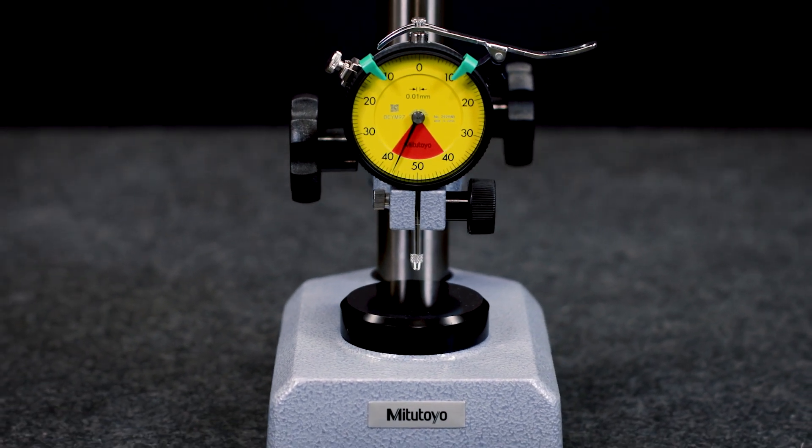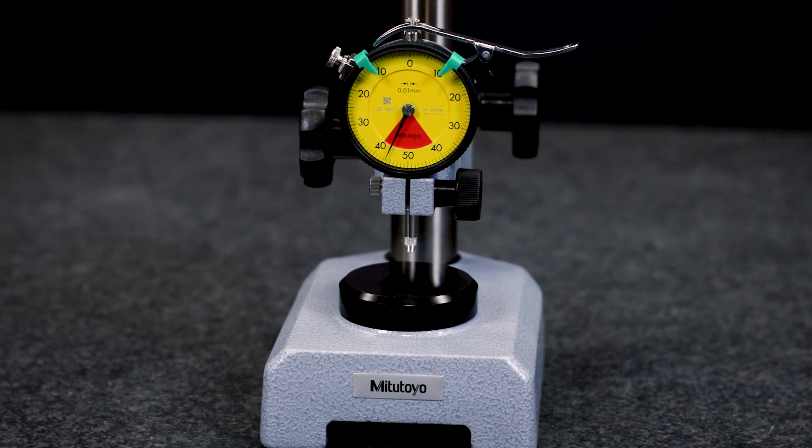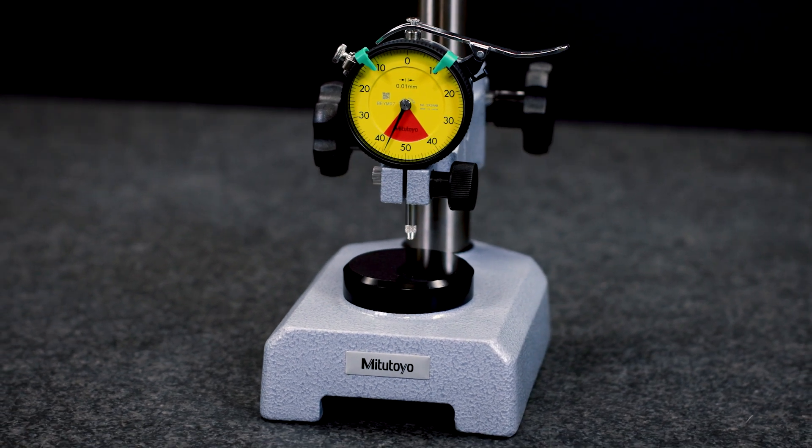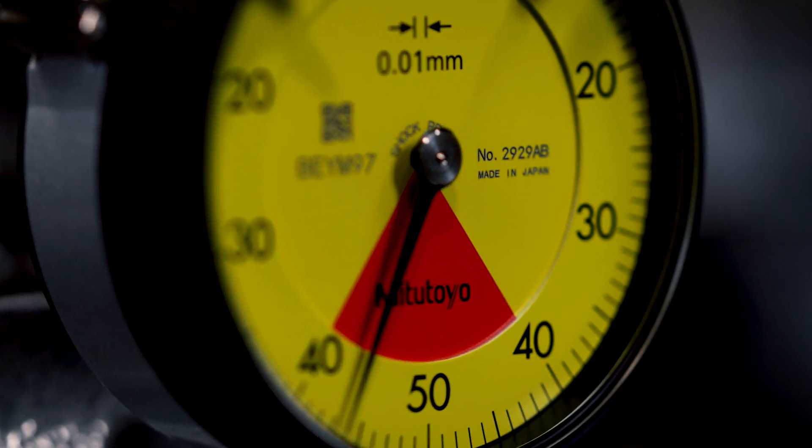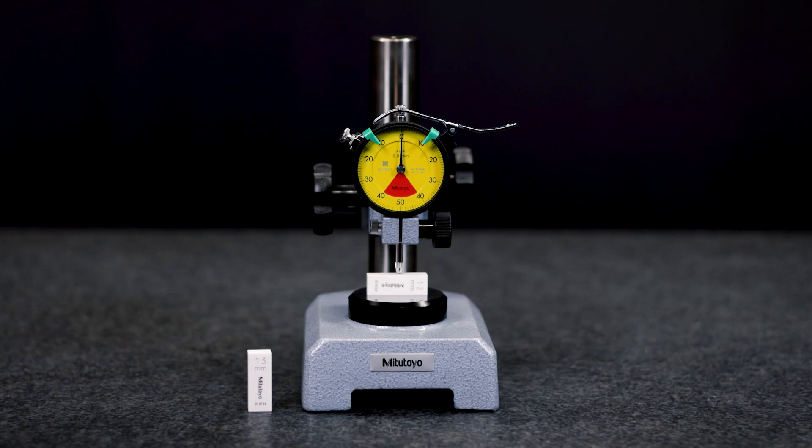To avoid such kind of misreading, one-revolution indicators are a better choice. These are equipped with a dial face with a red out-of-tolerance zone to indicate that the measured part, respectively a measured feature, is clearly out-of-tolerance.